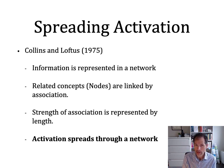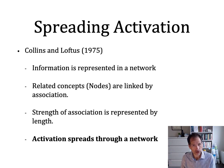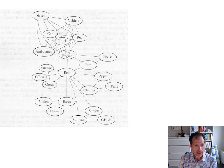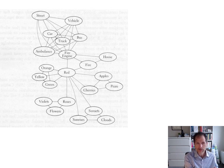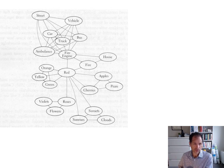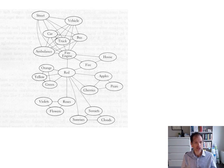It doesn't take you very long to get from one concept to the other. But you can think about distant concepts as well, and it's going to take you longer to verify those properties or to come up with features for those distantly related concepts. Activation spreads through this network. So for example, if you think of the color red, it's going to be closely associated with a network of other colors — orange, yellow, and green. It might also be closely associated with some fruits like cherries, which are then closely associated with apples and pears.